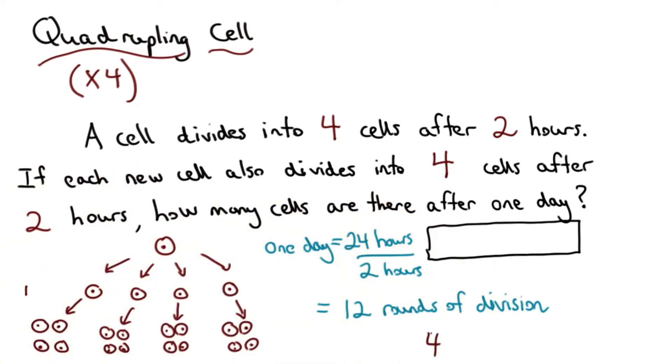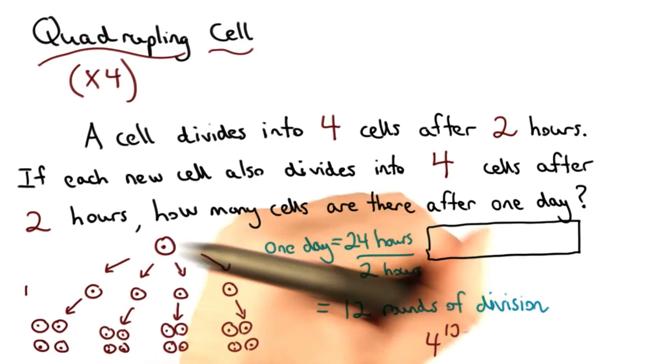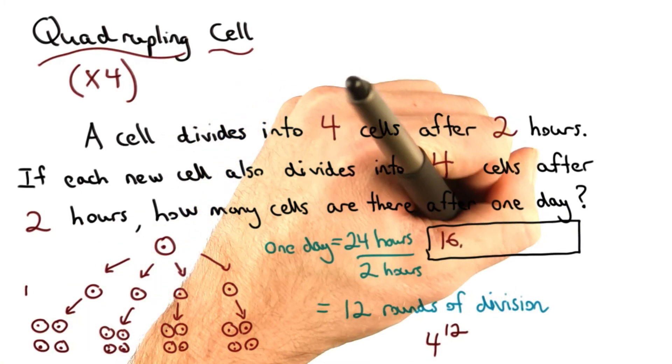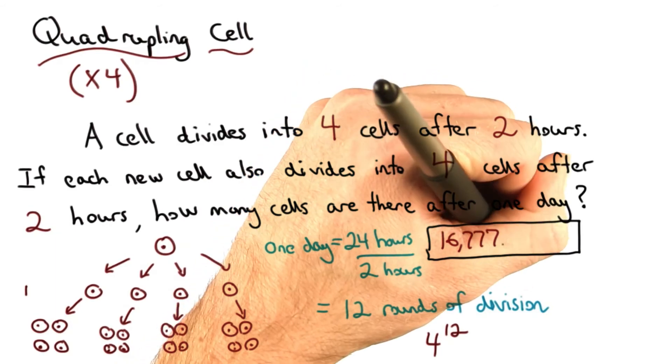So my base should be 4, and I have 12 rounds of division. 4 to the 12th. And I get an answer of 16,770,216.